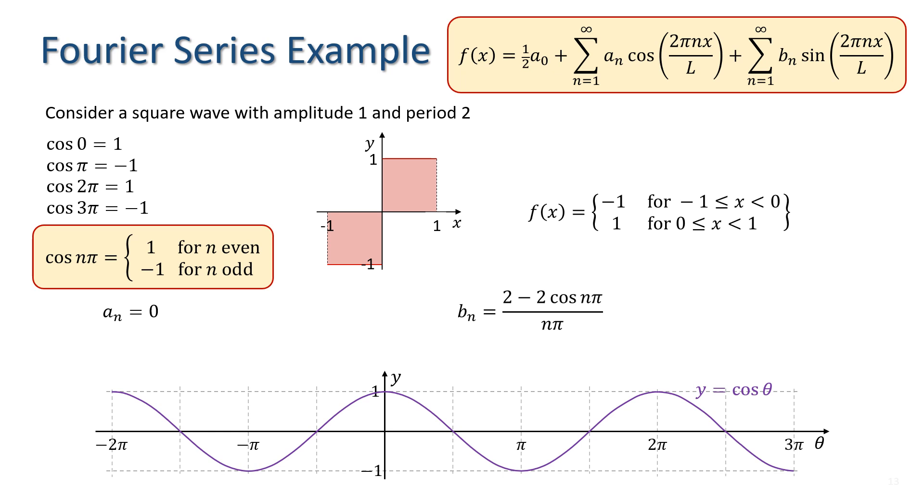Looking at our expression for b_n, we can see that b_n equals 0 when n is even and equals 4 over n pi when n is odd.